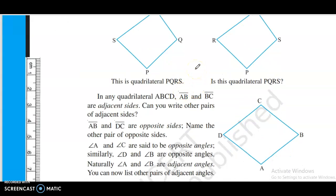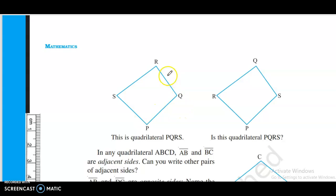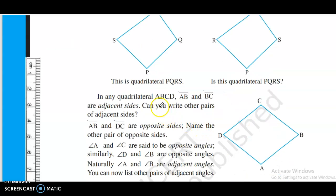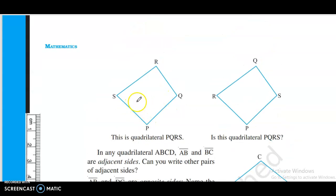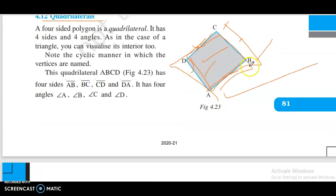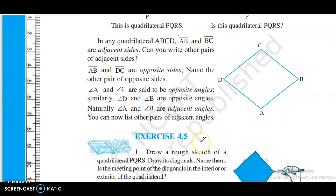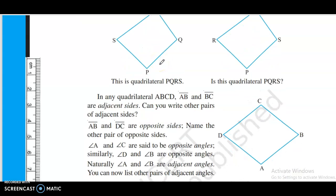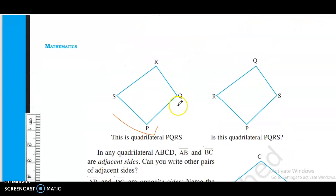This is quadrilateral PQRS. In quadrilateral ABCD, sides AB and BC are adjacent sides. Can you write the other pairs of adjacent sides?